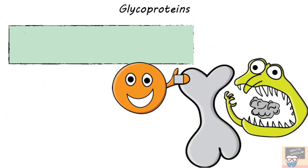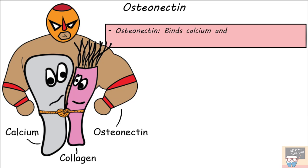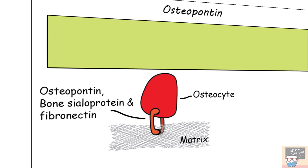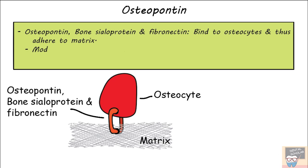These glycoproteins have a role in both bone formation and resorption. Osteonectin binds to calcium and collagen, giving it a role in mineralization. Osteopontin, bone sialoprotein, and fibronectin bind to osteocytes, helping them adhere to the matrix, and are said to modify the behavior of bone cells — thus participating in bone remodeling. So: osteonectin for mineralization, and osteopontin, bone sialoprotein, and fibronectin for bone remodeling.